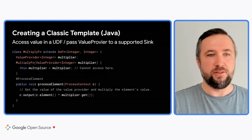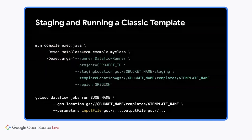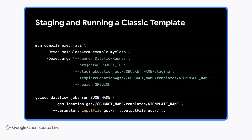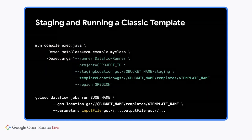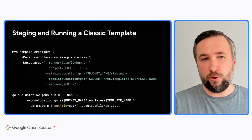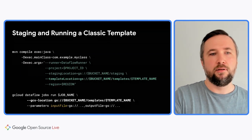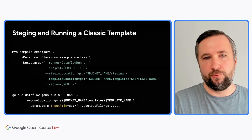Here is an example of how it can be used in the pipeline. Let's say you want to implement a function that processes your elements and multiplies them by a number, and this number — the multiplier — is the parameter to the template. You have to pass this value provider to a function and store it. Note that you cannot access the value provider's actual value in the constructor, because when the pipeline is constructed we don't know these values yet, and the Beam SDK will simply throw an exception if you try to access the value provider at this point. But when processing elements, this is when you can get the actual value of this parameter and use it in your calculation. Here are the commands you have to run in order to stage and run the template.